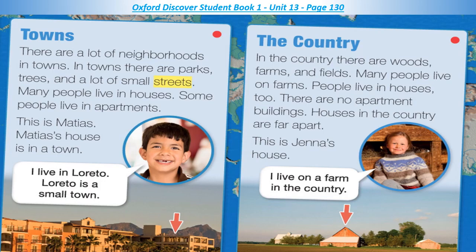In the country, there are woods, farms, and fields. Many people live on farms. People live in houses, too. There are no apartment buildings. Houses in the country are far apart. This is Jenna's house. I live on a farm in the country.